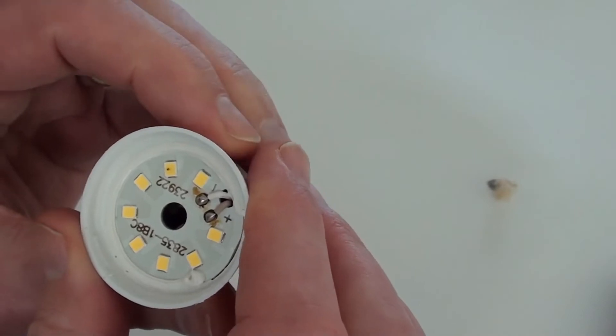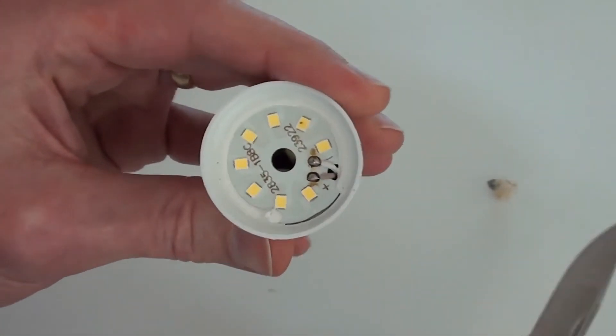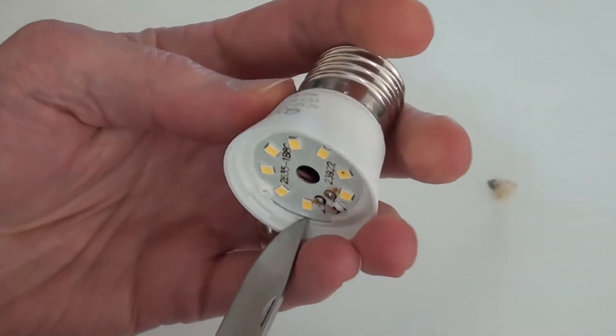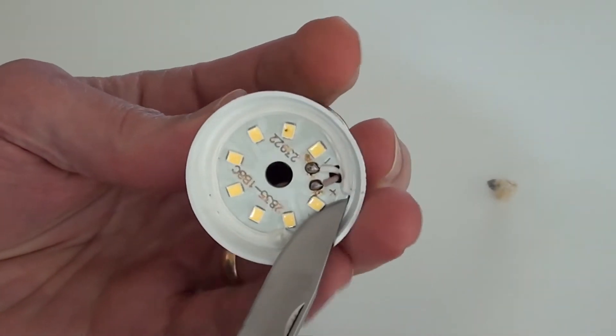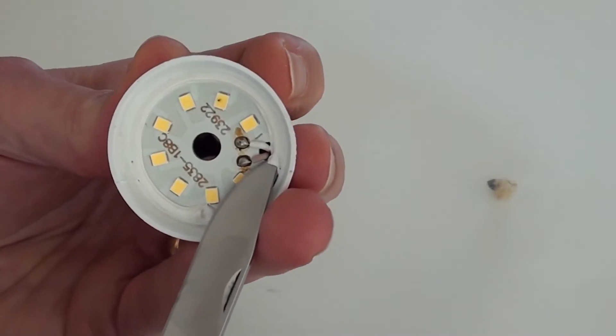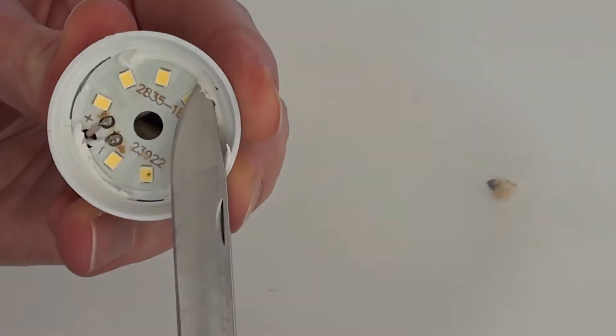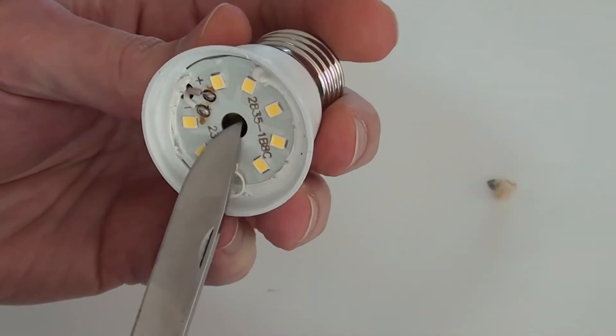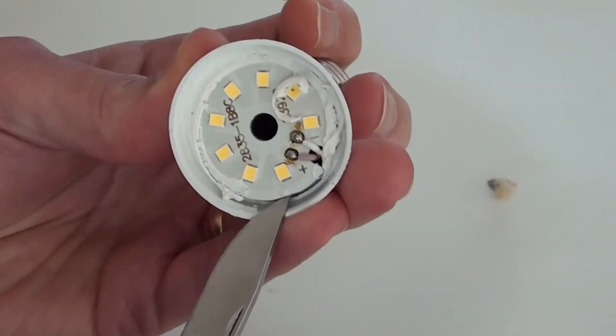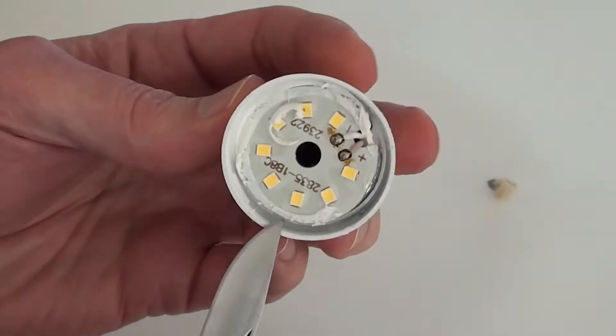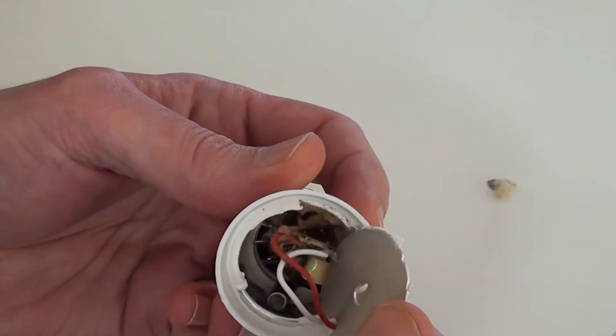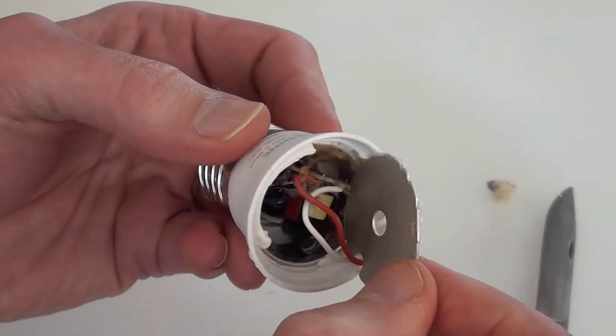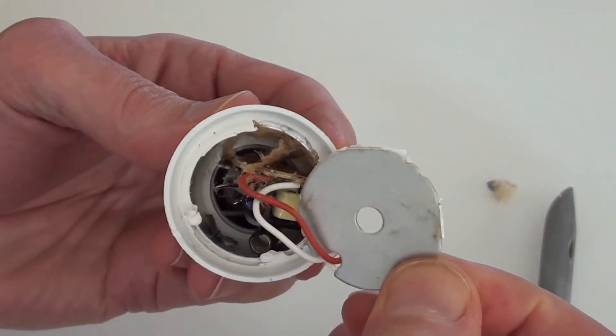Okay, let's see what else we can find. So I should just be able to prise this circuit board out of the top here. I think it's just glued in around the side with some sort of silastic. Let's have a look. Wow, okay.